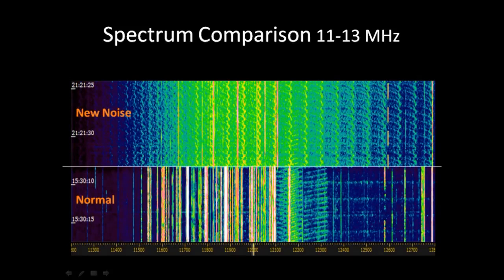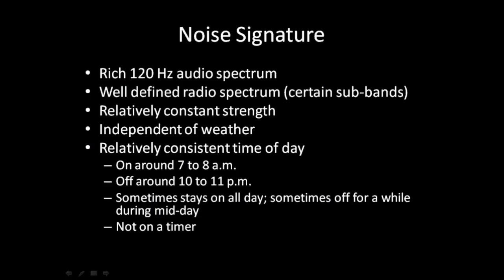After understanding the normal, I then started to look at the noise signature. One thing I discovered is it's got a really rich 120 Hz audio spectrum — there are spikes at 120 Hz and 60 Hz harmonics. Also, this radio noise came in a well-defined spectrum, certain subbands around six and twelve megahertz. It wasn't all over everywhere, and it did not extend up into the VHF area as power line noise often does. It was relatively constant strength, which led me to believe it was coming from one location, and it was also independent of weather — didn't matter whether it was windy or rainy.